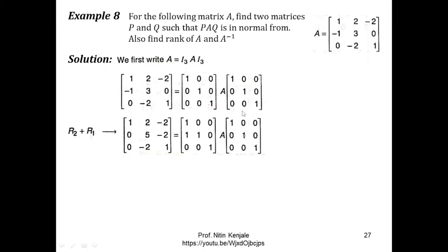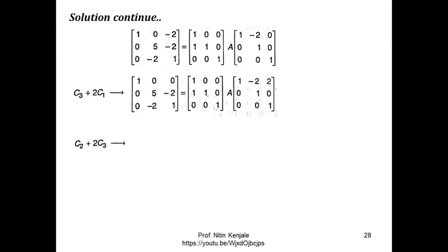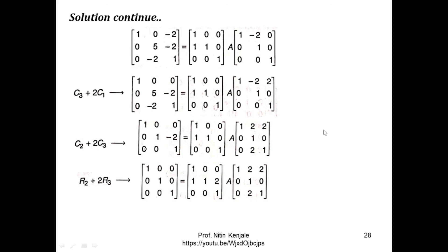Due to these transformations we will get the Normal PAQ form of matrix A. You can pause the video and check these transformations. Finally, we end up with the equation I equals PAQ — this is matrix I, this is matrix P, and this is matrix Q. From this left-hand side matrix we can say that the rank of matrix A is 3.